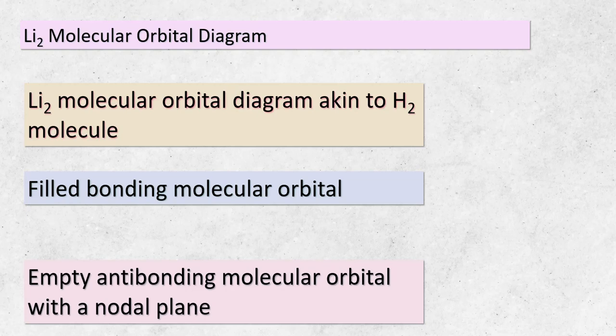Let's shift our attention to Li₂. Its molecular orbital diagram shares certain similarities with that of an H₂ molecule. If we closely examine the electronic structure, we notice the presence of a filled bonding molecular orbital as well as an empty anti-bonding molecular orbital. What's particularly intriguing is the nodal plane that divides these orbitals right between the two atoms. This nodal plane serves to emphasize the dynamic interactions taking place within the molecule. As we delve deeper into the molecular world of Li₂, we uncover captivating details about its electronic arrangement and bonding characteristics.